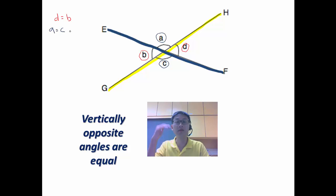So let's say I'm given that angle D is 43 degrees. So what are the other angles? Now immediately I know that B is also 43 degrees because of the vertically opposite angle property. Vertically opposite angles are equal. Remember that.